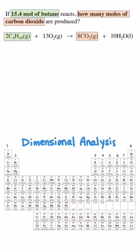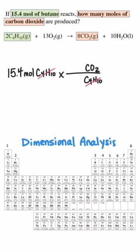I use dimensional analysis to solve these kinds of problems. I start with the given value and then I use a conversion factor to cancel the chemical I don't want by putting it on the bottom of this fraction and then convert to the new chemical by putting it on the top, so CO2 on top.